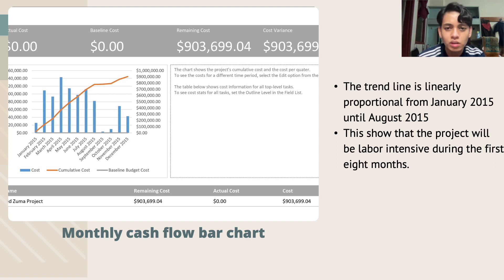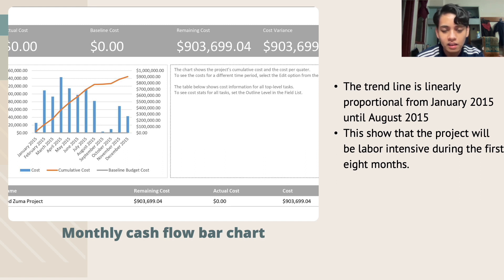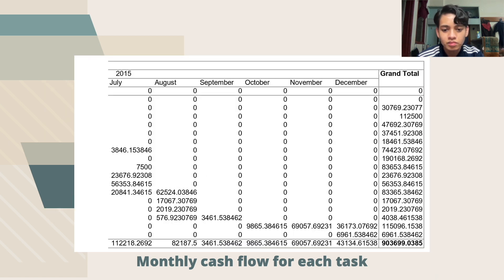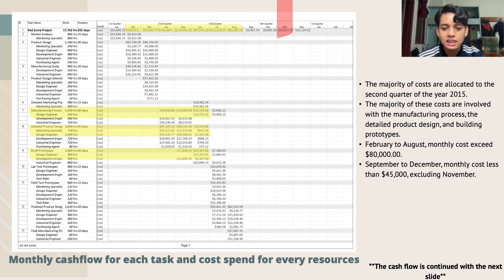From the bar chart, we can interpret that the trend line is linearly proportional from January 2015 until August 2015, showing that the project will be labor-intensive during the first eight months. Next is the monthly cash flow for each task.